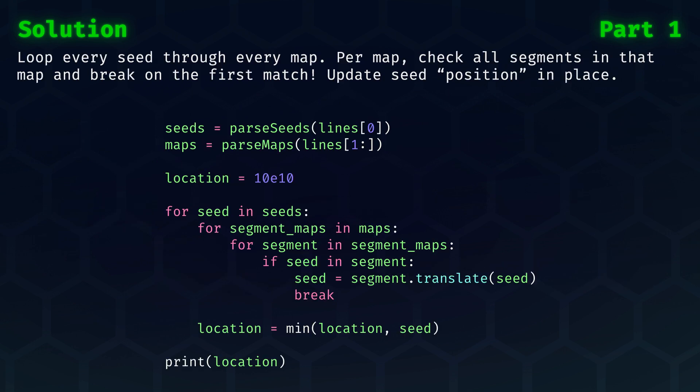Looking at the outline again, we can then hopefully fully understand what is going on. We loop over every seed, and then for every seed we will look at the segment maps of the next property transition. Then for every segment map of that transition, we check if the seed is in that segment. If it is, then we simply translate that seed's number and we break. We break here because we don't want to translate it twice within the same transition. After updating the seed's number through all transitions, we can update the minimum location, which eventually we print. And that's it for part one.